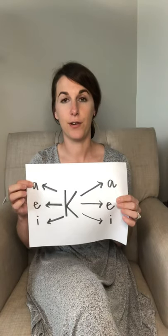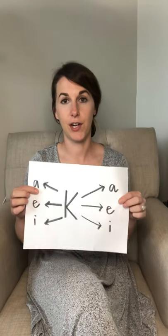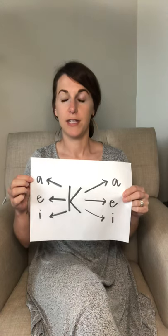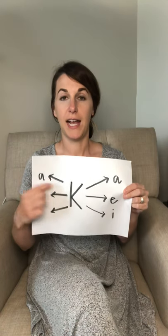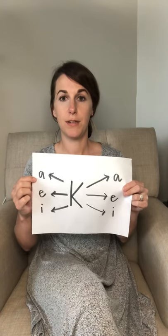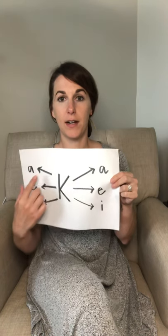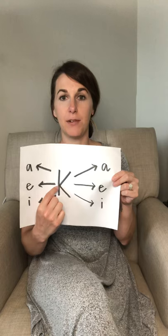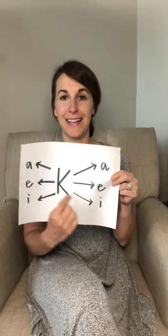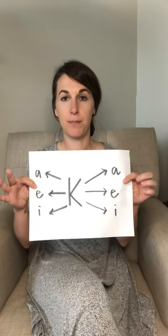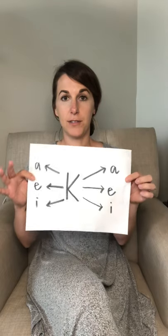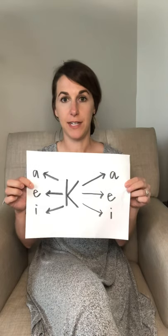After a child has mastered that, we move on to working on sounds in syllables. What that is is adding a vowel at the front or the end of the consonant that the child is working on. For example, if you wanted the consonant at the end of the syllable it would be ak, ek, ik, or vice versa at the beginning it would be ka, ki, kai. This is just a simple diagram that I draw for children, but you don't have to have this.